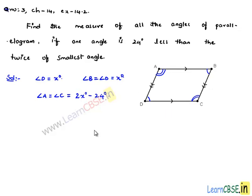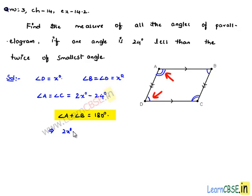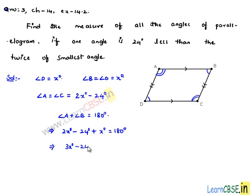We know that in a parallelogram, the sum of adjacent angles is equal to 180 degrees. So angle A plus angle B equals 180 degrees. Substituting, we get: (2x minus 24) plus x equals 180 degrees, which gives us 3x minus 24 degrees equals 180 degrees.